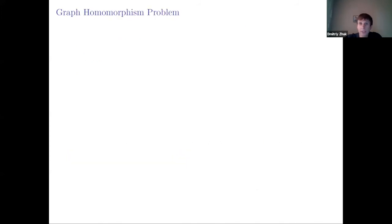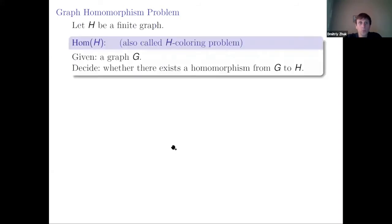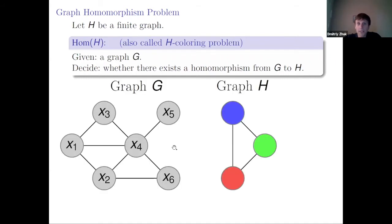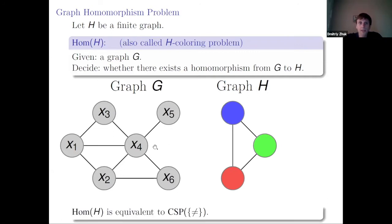Another reason why this problem is interesting is the graph homomorphism problem. Given a graph H, the H-coloring problem is: given a graph G, decide whether there exists a homomorphism from G to H. The standard example is when H is the triangle — finding a homomorphism is then equivalent to graph three-coloring. Graph homomorphism is equivalent to CSP over inequality, and CSP can be formulated as a structure homomorphism problem.